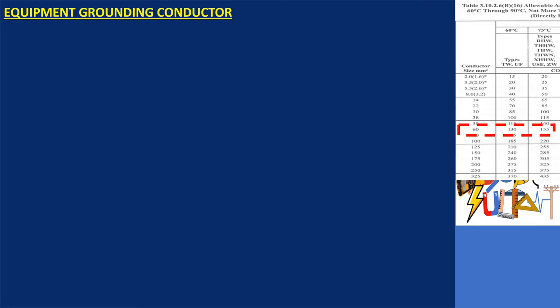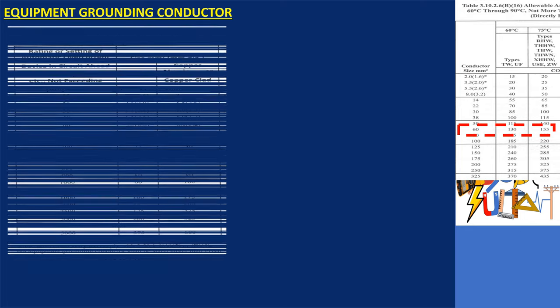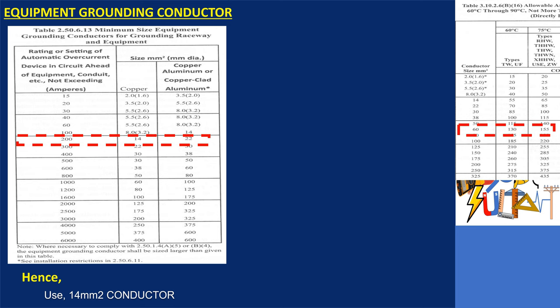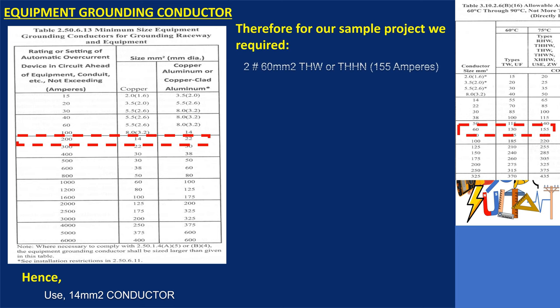For the equipment grounding conductor, we will use table 2.50.6.13. For the 175-ampere overcurrent protective device, we will use 14 square millimeters. For our sample project, we will use 2 conductors of 60 square millimeters each, which can be either THW or THHN, and 1 conductor of 14 square millimeters for the equipment grounding conductor.